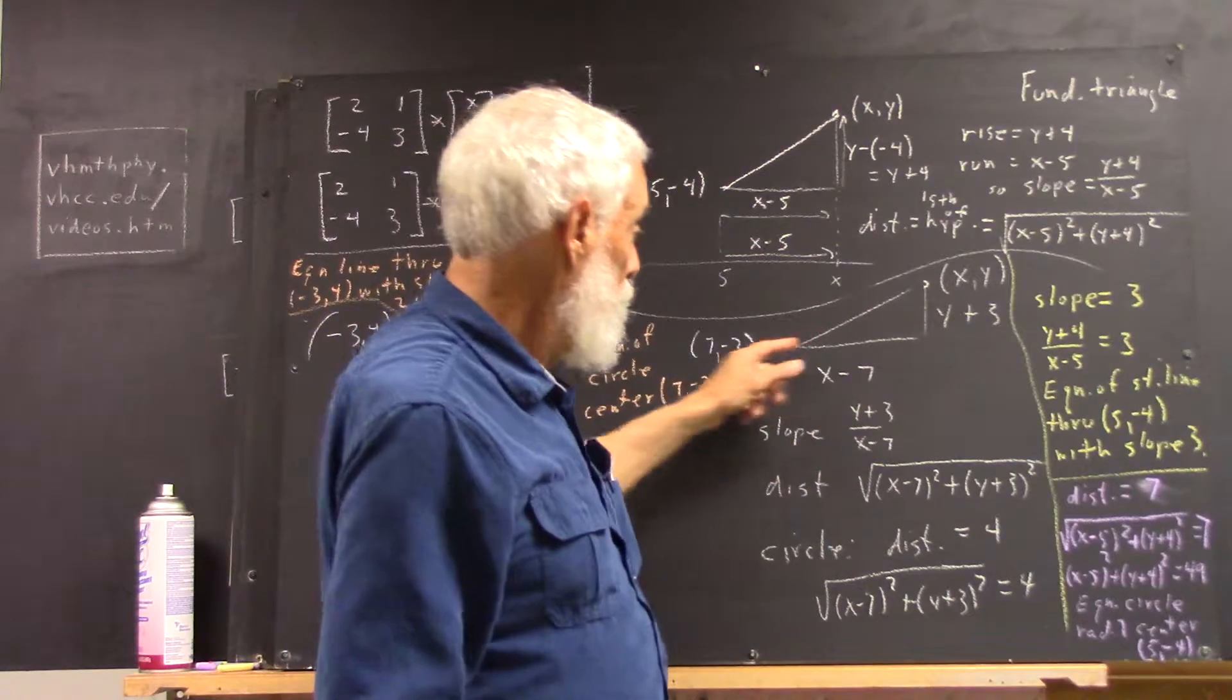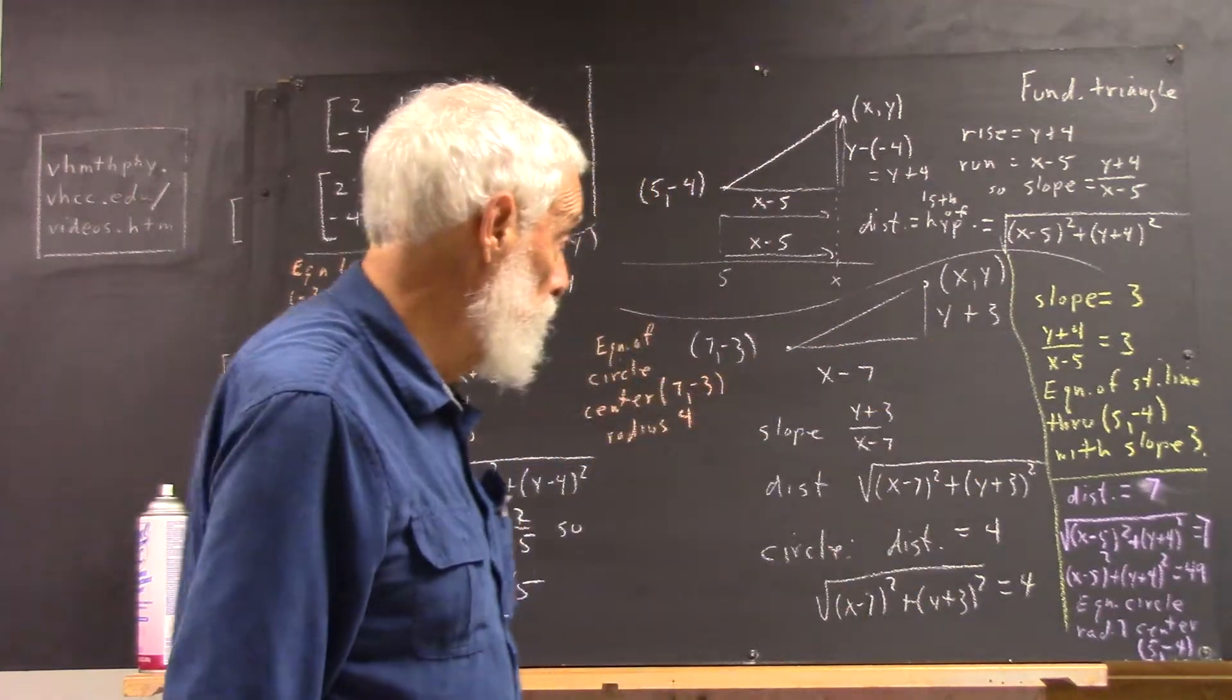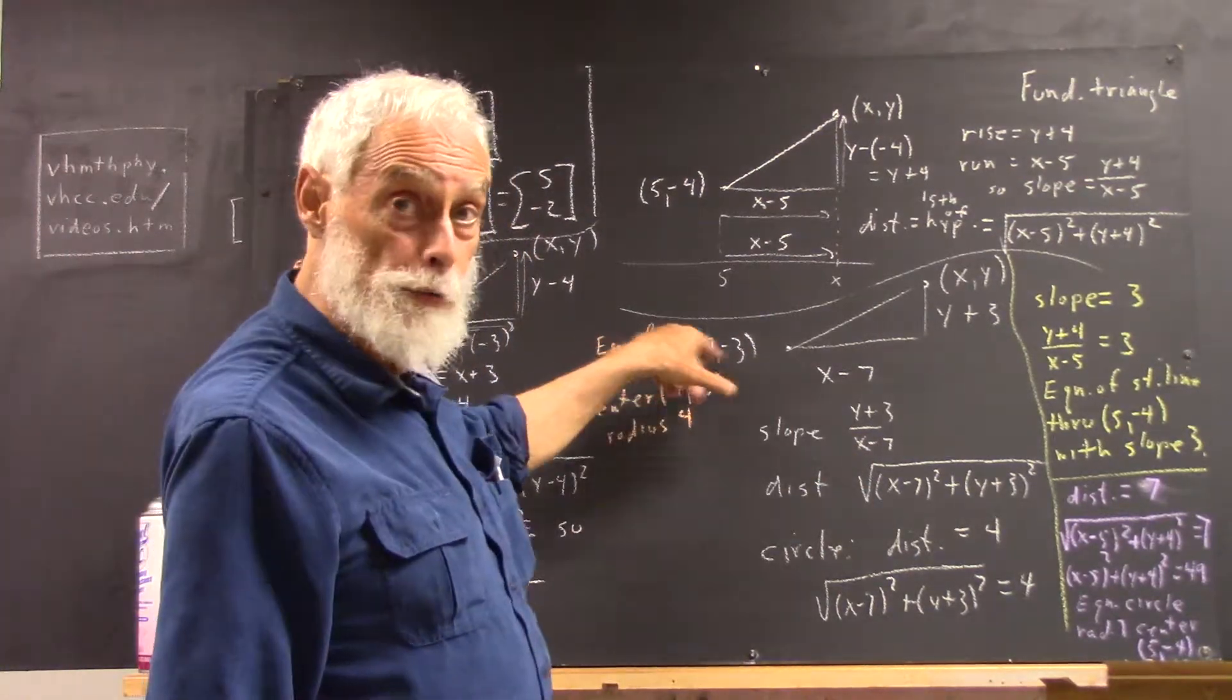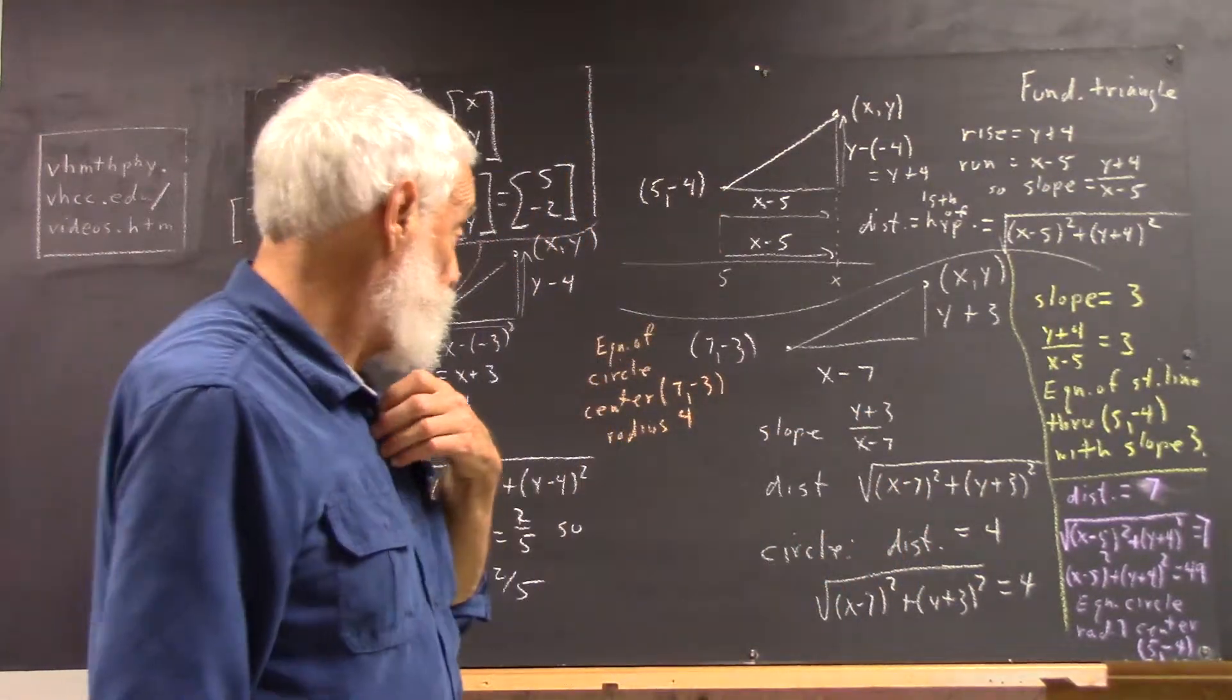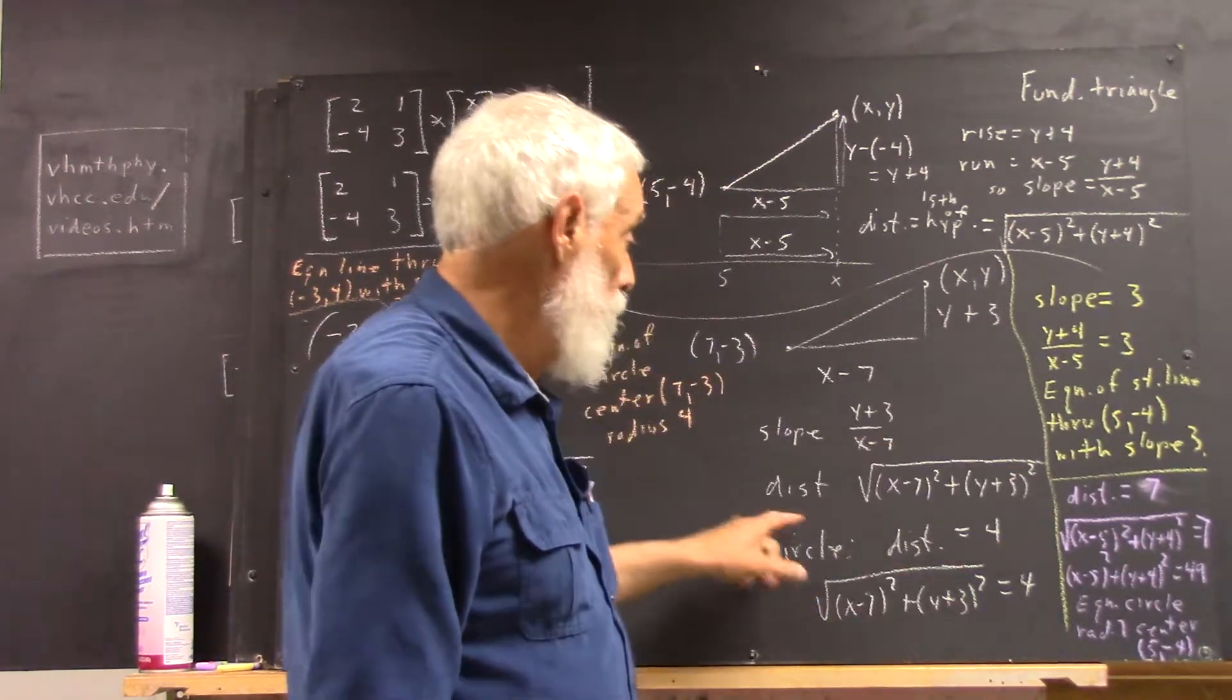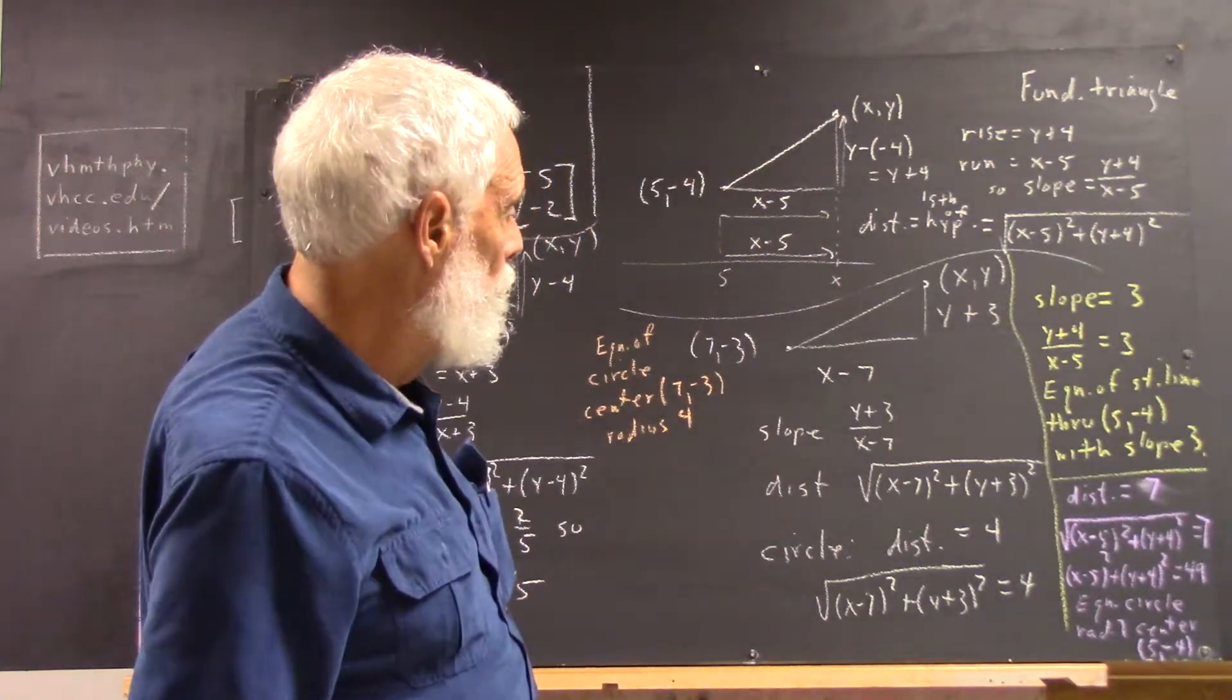So, this side, or this displacement, would be x minus 7, and this displacement would be y minus negative 3, which is y plus 3. So, our slope is y plus 3 over x minus 7, and if we wanted to write an equation of a line through 7 negative 3 with a given slope, we would just set that equal to that slope. The distance is, well, square this, square this, there they are, square root sign, and there's our distance, which is the length of this hypotenuse.